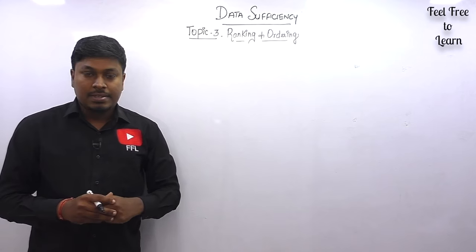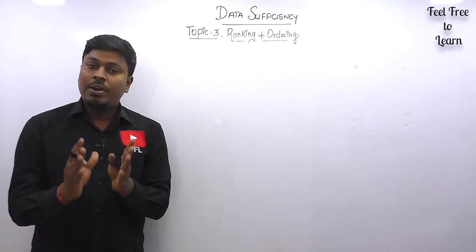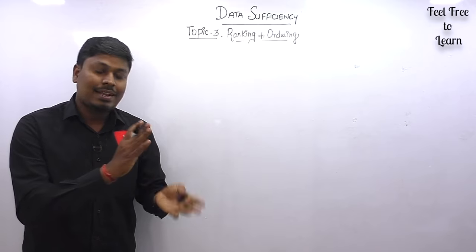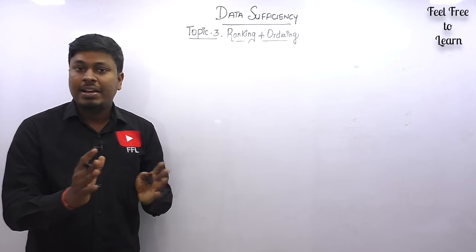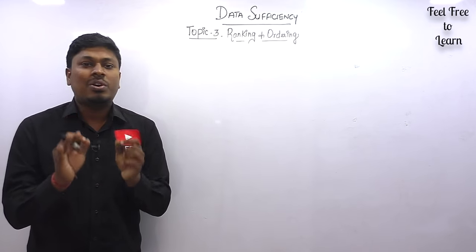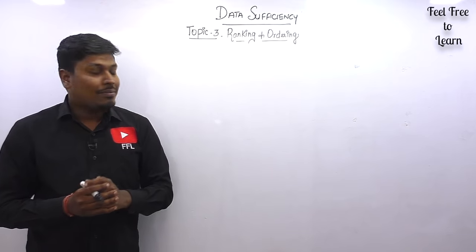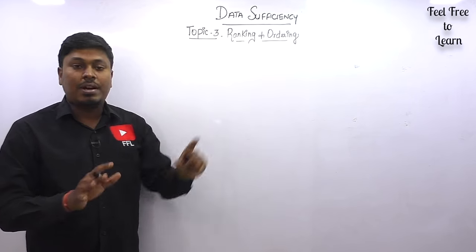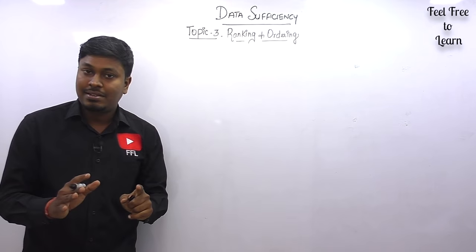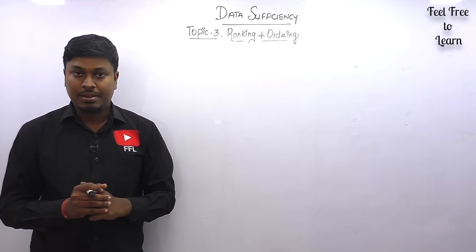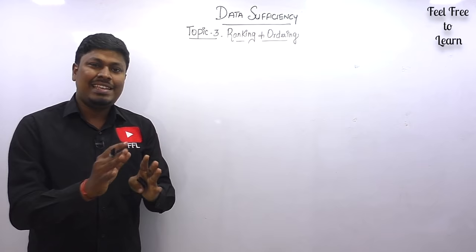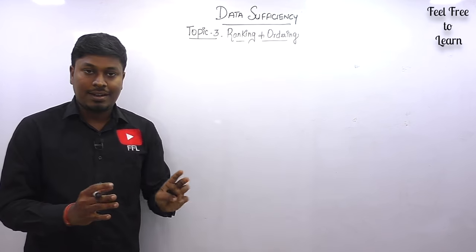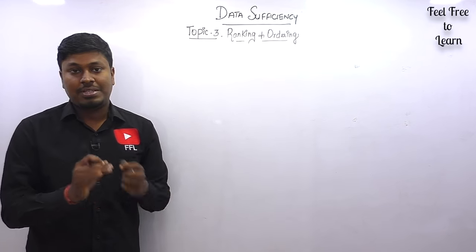Every time I say this: if you are going to solve a question in data sufficiency — whether it's direction, blood relation, or ranking and ordering — first you should know the concept 100%. Without knowing the concept of ranking and ordering, you can't solve a single question in data sufficiency. So before watching this video, at least learn the basic concept of ranking and ordering, then watch the complete video and you'll understand all the questions clearly.